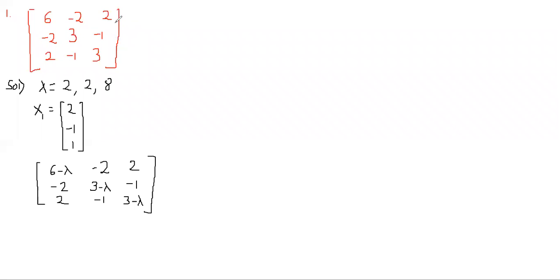We have already found the eigenvalue and eigenvector for λ=8. Now we will find the eigenvector for the corresponding eigenvalue λ=2. If we have three different eigenvalues it is very simple — we use the same method. But if we have two same eigenvalues there is a catch. Let's see how to solve that one. This is Case 2.